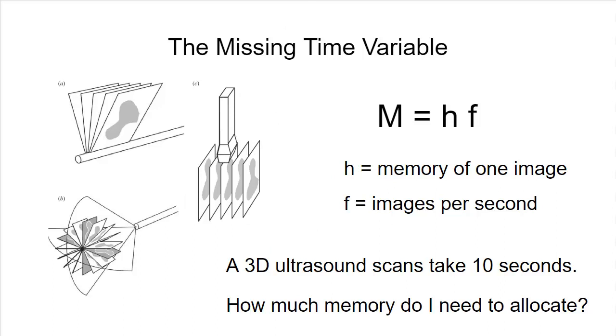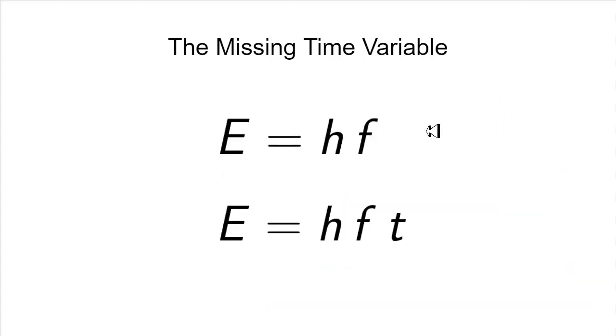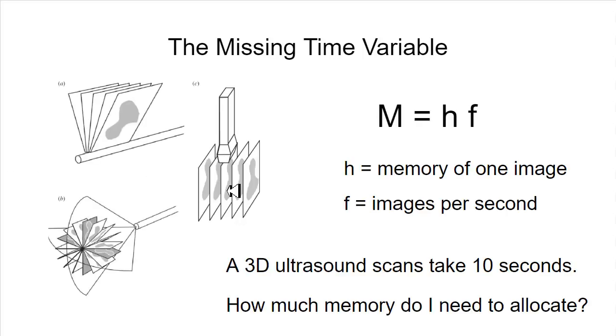In order for my software to work correctly, I need to allocate the correct amount of memory to store all the images that I collect during the scanning procedure. I've written an equation that looks very much like this equation. It's very similar. I need to know how much memory to allocate. The amount of memory that I need to allocate is equal to h, which is the amount of memory of one image, times the frequency, which is the number of frames that are coming in per second.